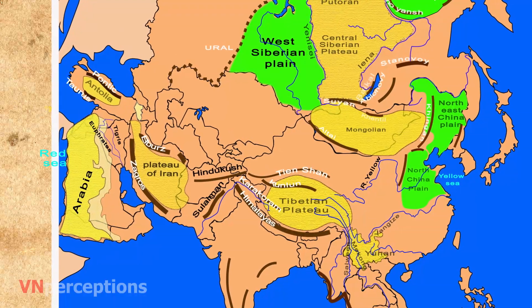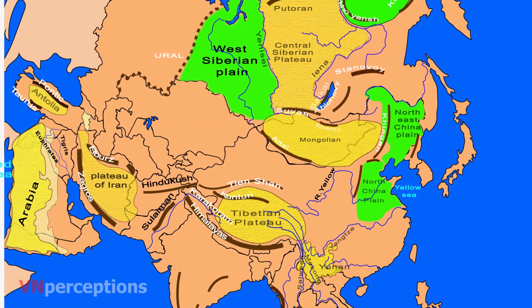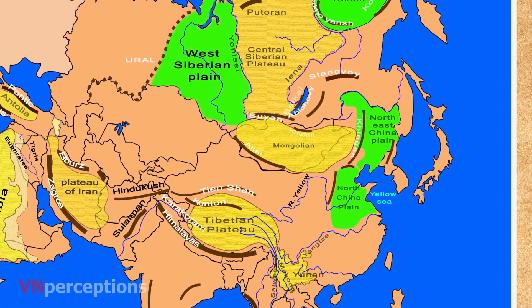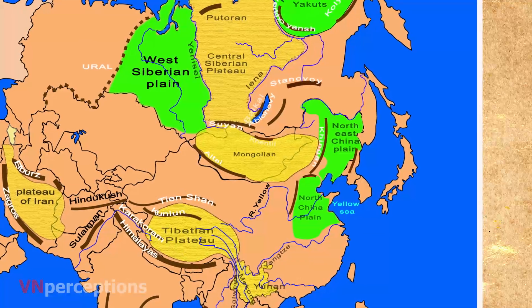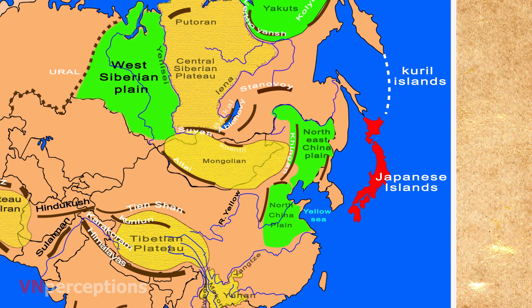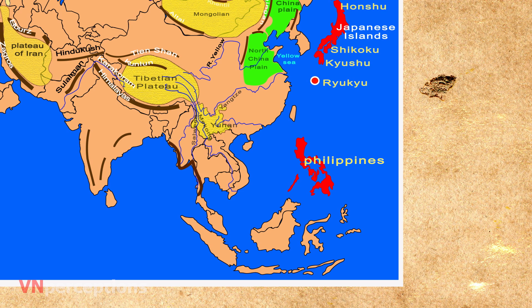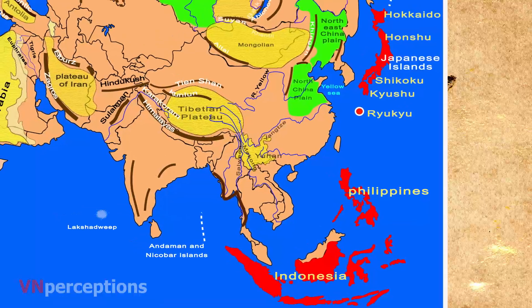Next is the Island Chains. A series of island chains lie to the east and southeast of mainland Asia, extending in an arc and forming archipelagos. From the tip of the Kamchatka Peninsula in the Pacific Ocean onwards, these are the Kuril Islands, the Japanese Islands — including Hokkaido, Honshu, Shikoku, and Kyushu — then the Ryukyu Islands, the Philippines, the Indonesian Islands, the Andaman and Nicobar Islands, and Lakshadweep.